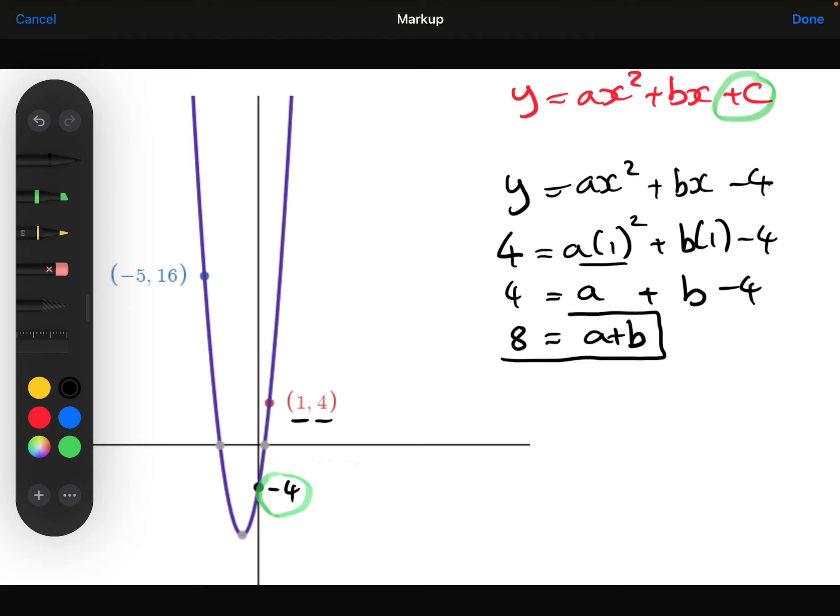And we'll pause there for a minute and come back to that in a second. I also know that when x is minus 5, y is 16. So if I do the same thing for that. So y is 16 when x is minus 5. So 16 is equal to minus 5 squared is positive 25 times by the a. Minus 5 times b is minus 5b. Minus the 4.